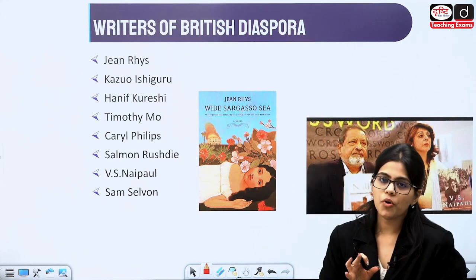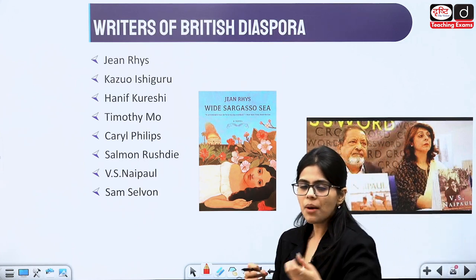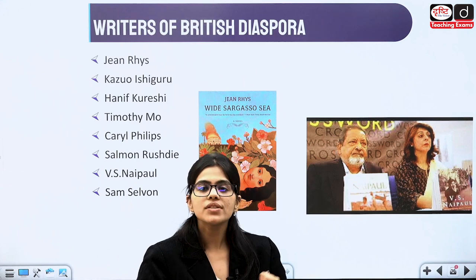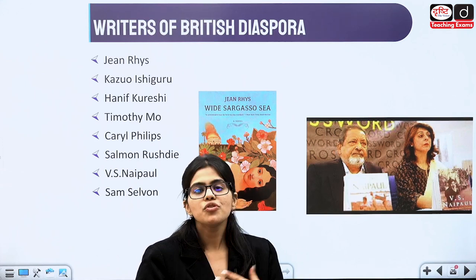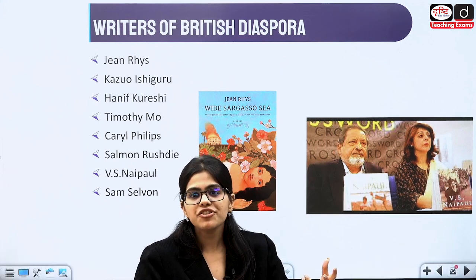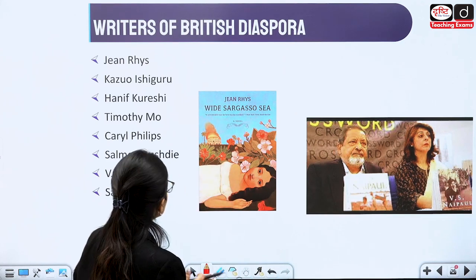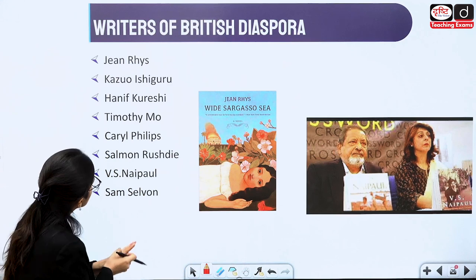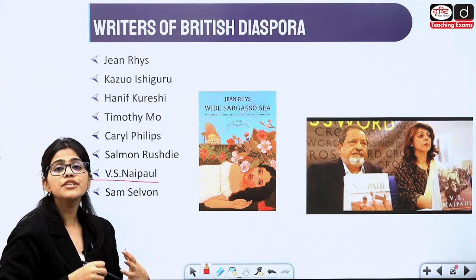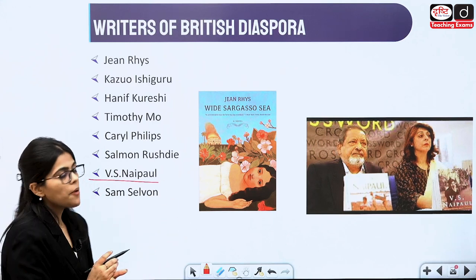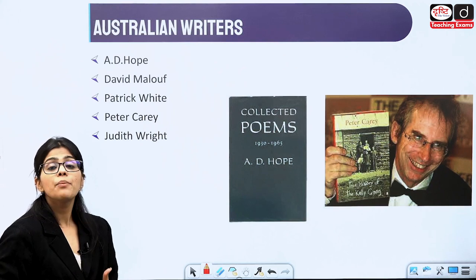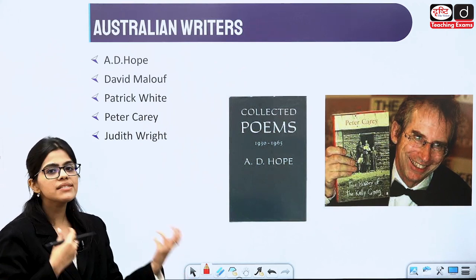Then comes the British diaspora. Diaspora comes from a Jewish word meaning dispersal — as the Jews dispersed everywhere, when people are dispersed you call it diaspora. With diaspora comes theories like mimicry, alienation, and nostalgia. Writers include Kazuo Ishiguro, Hanif Kureishi, Salman Rushdie, V.S. Naipaul, and Sam Selvon. Detailed summaries may not be needed for all, but knowing about the works they have written is important. Then we have the Australian writers, from whom questions are also asked: A.D. Hope, David Malouf, Patrick White, Peter Carey, and Judith Wright.